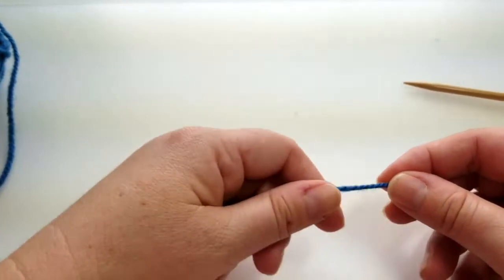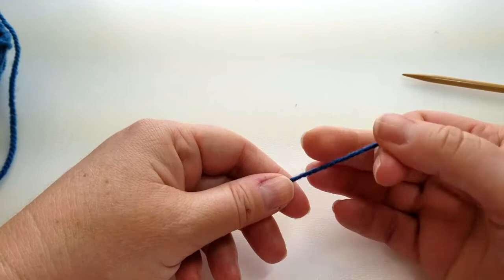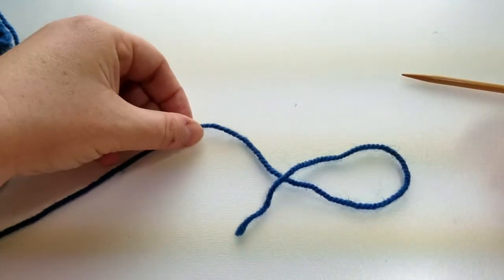Today I'm going to show you how to make a slip knot. All you do is take the end of your yarn and just fold it over and form a simple loop.